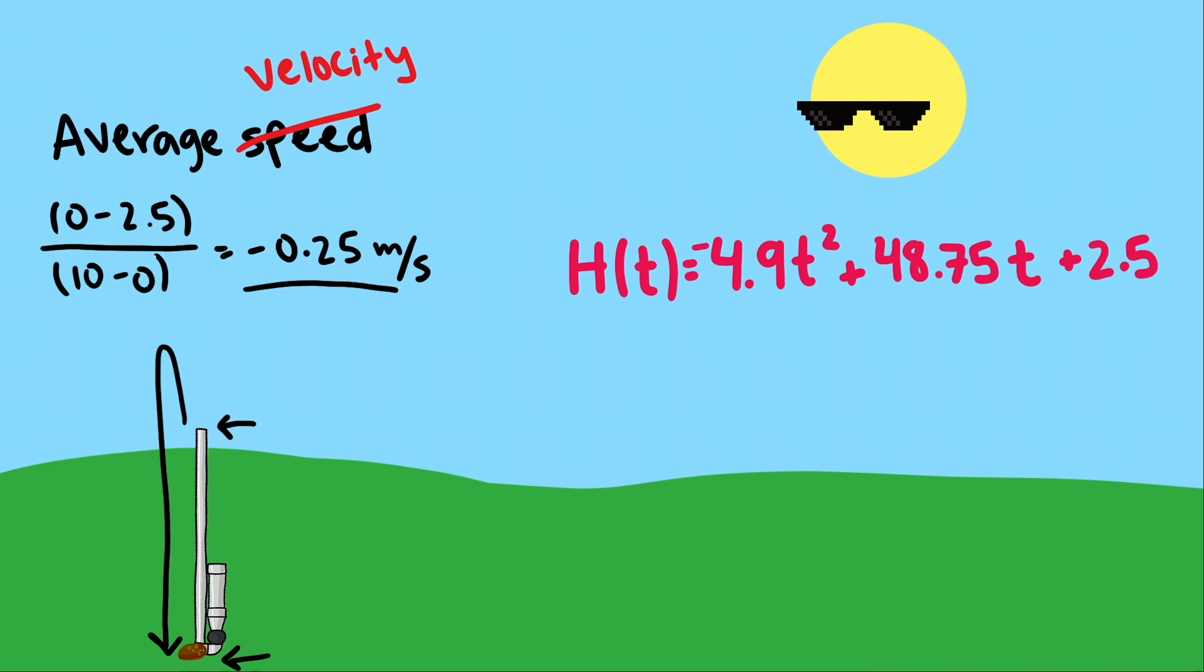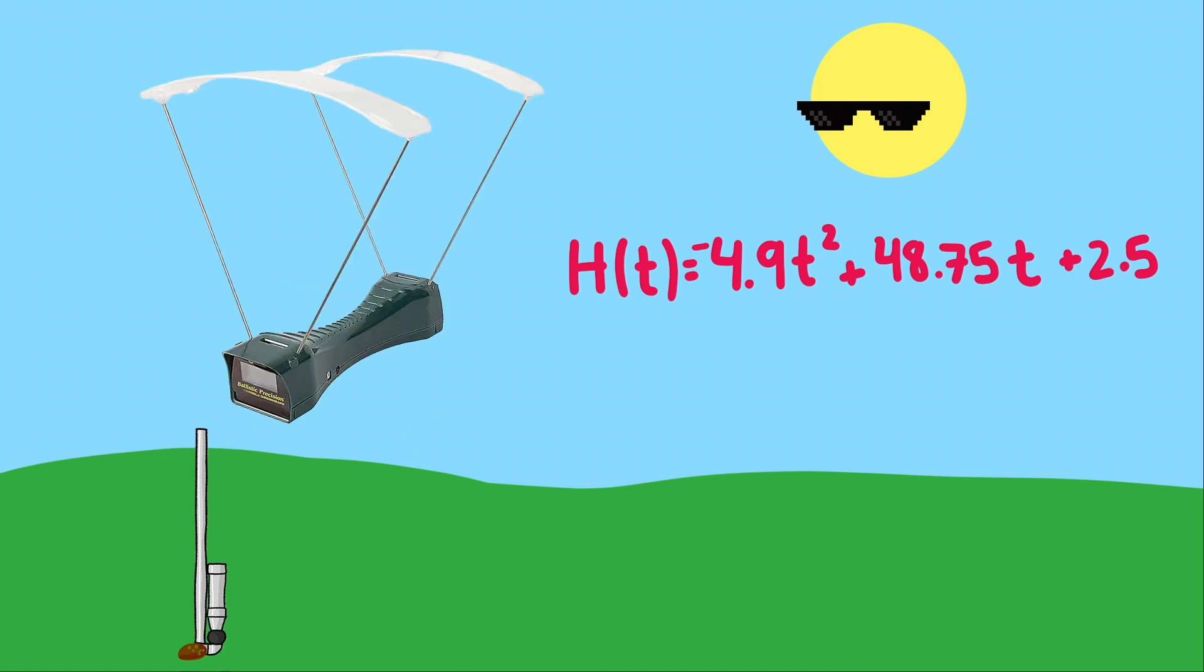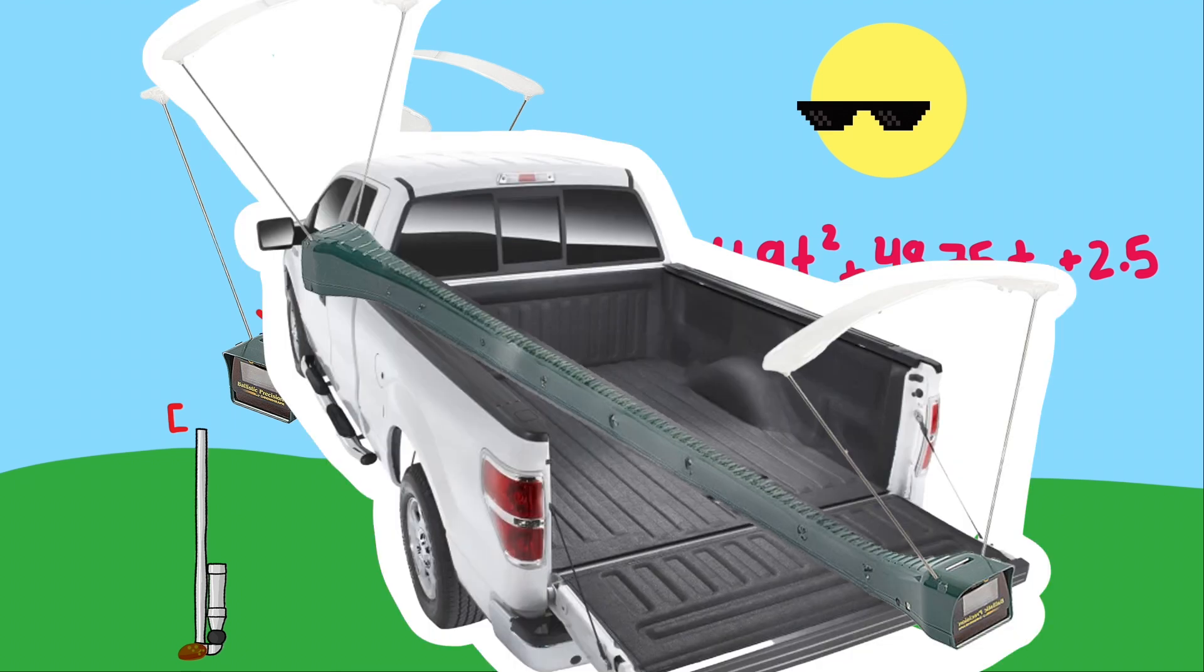This is obviously not very accurate. It is the average velocity over the time period, but with the potato going up and down during that time, it doesn't capture the initial speed well. So we should do what the chronograph does. Take a small interval at the beginning of the shot. This is one reason why chronographs are somewhat short, to get an average speed that's not much different from the initial speed of the bullet. That and putting a 50 meter chronograph in your car is pretty difficult.